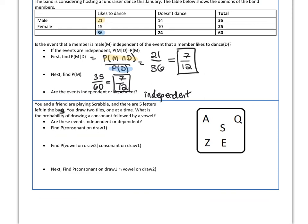In this next example, you and a friend are playing Scrabble and there are 5 letters in the bag. You draw two tiles one at a time without returning either tile. What's the probability of getting a consonant followed by a vowel? First, let's think about getting a consonant on draw 1. There are three consonants, so the probability of getting a consonant on the first draw is three out of five.